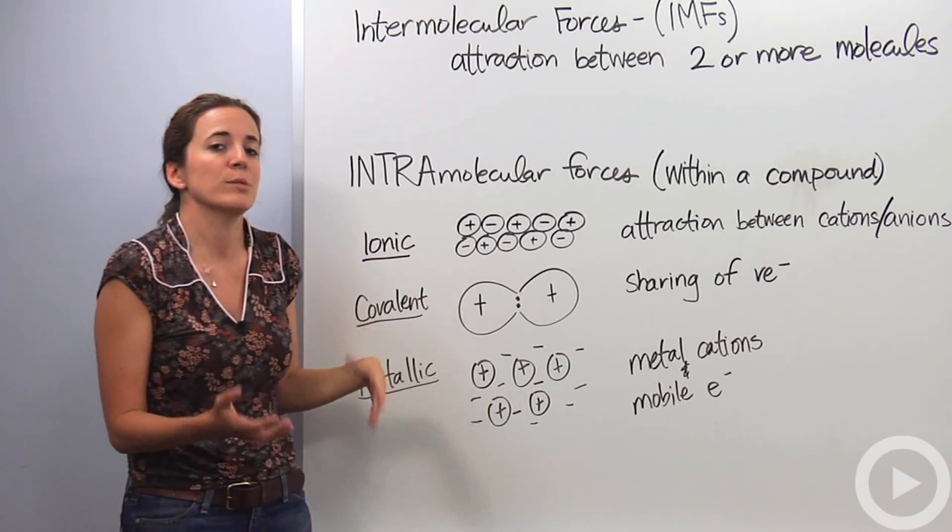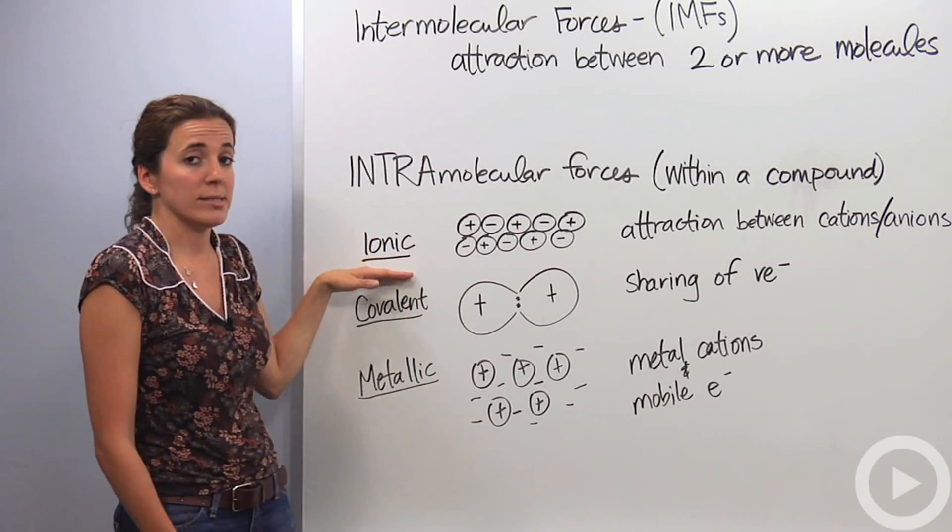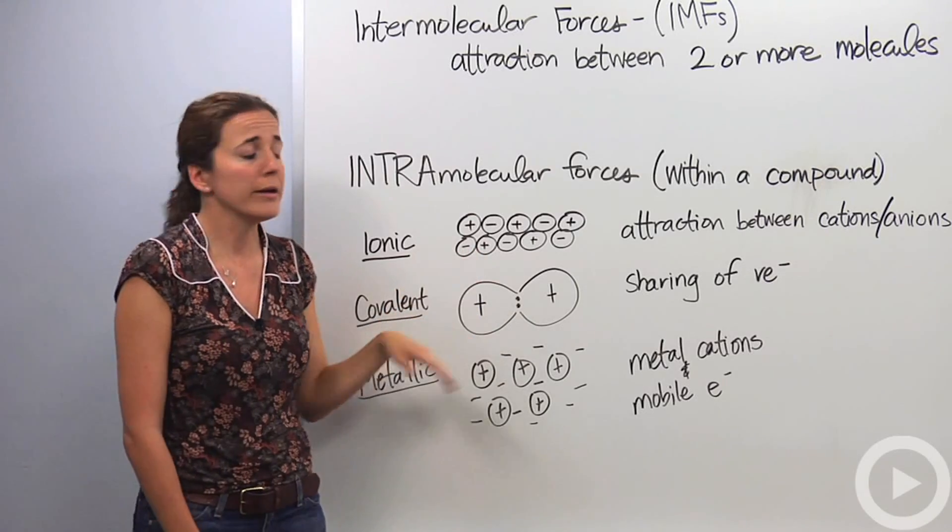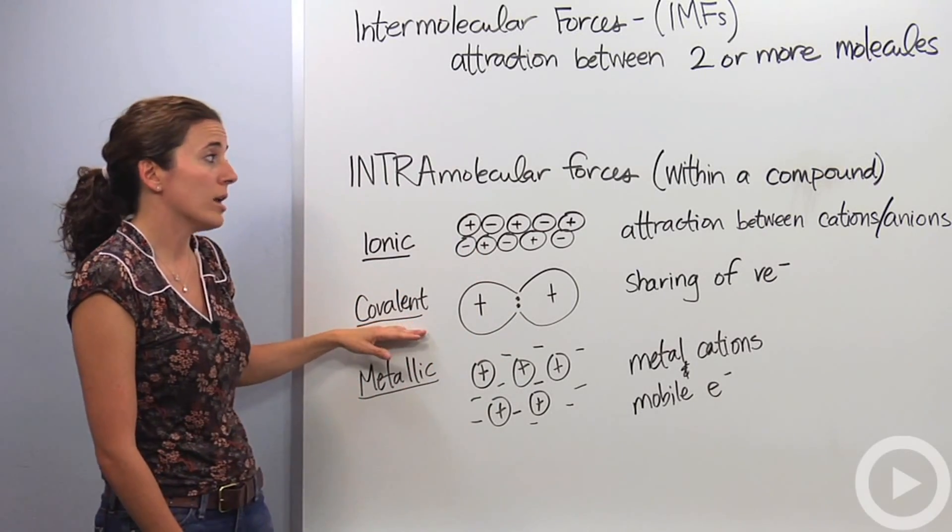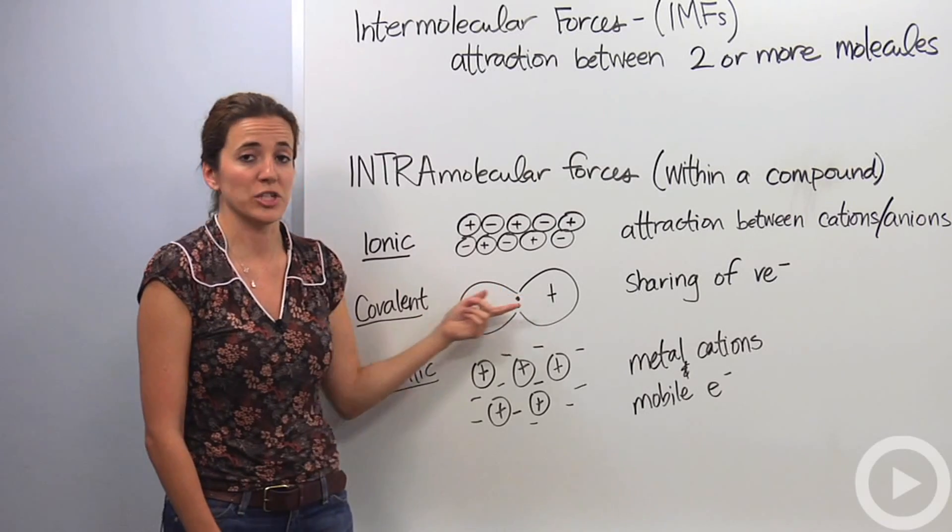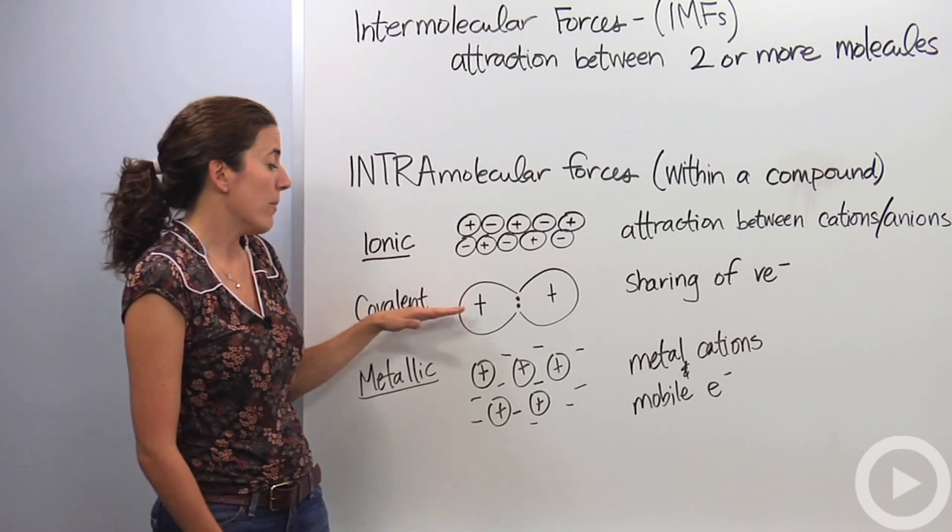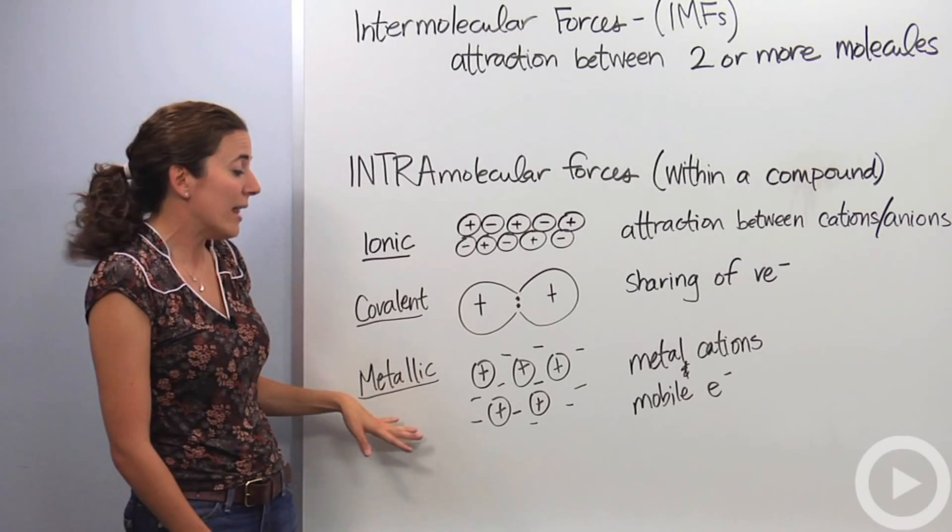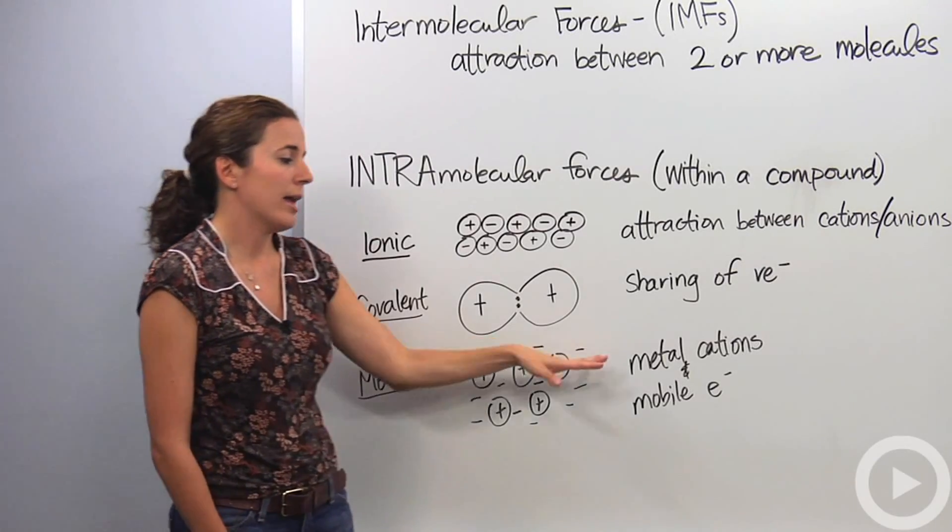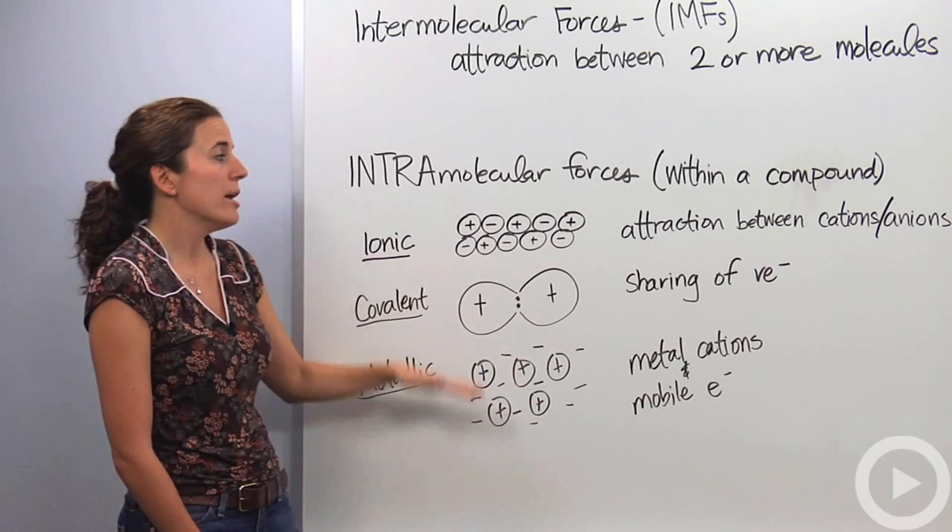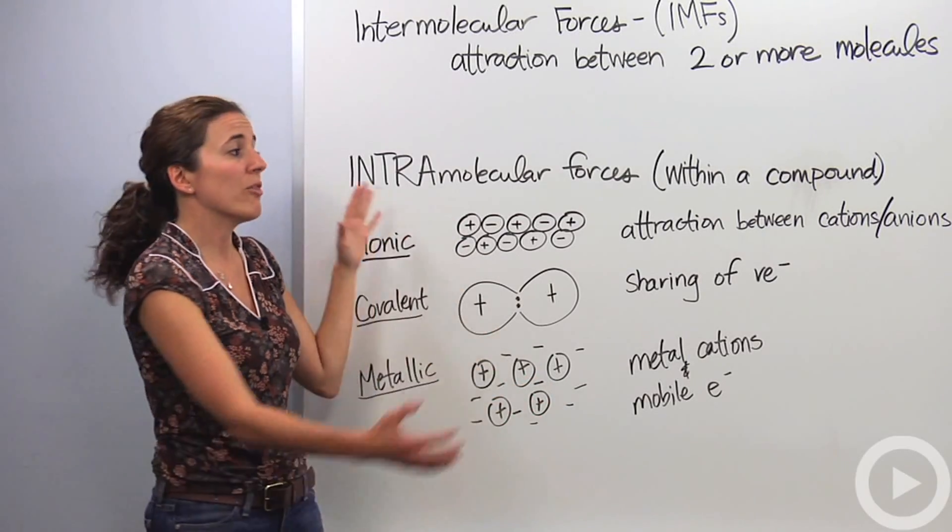So intramolecular forces you might be familiar with. Ionic bonds are intramolecular forces, how the cations and anions are attracted to each other. Covalent bonds are also intramolecular forces. They're actually the bonds between the sharing of the valence electrons. Those are the covalent bonds that are actually intramolecular forces. And then lastly, it's the metallic forces. It's the metal cations and the mobile electrons kind of flowing between the cations, the sea of electrons. Those three are intramolecular forces. They're within a compound.